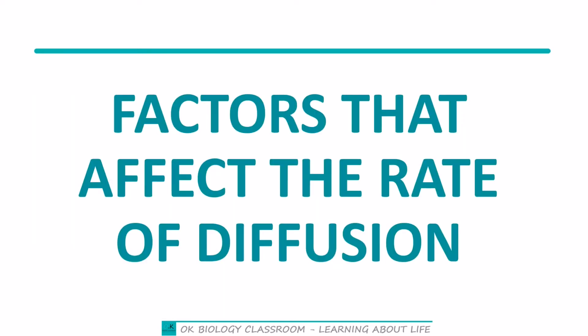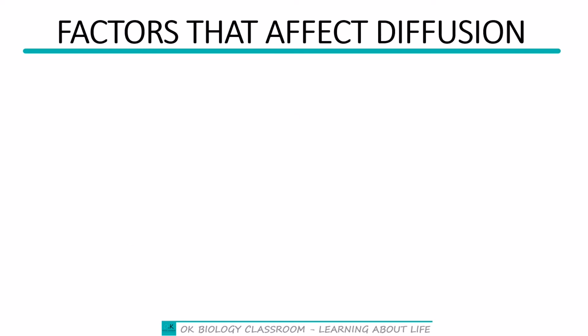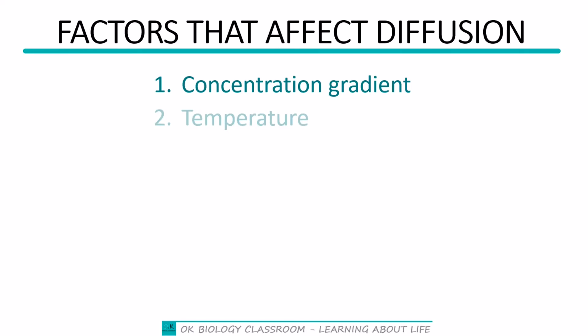Now let's move on to factors that affect the rate of diffusion — whether diffusion will be going high or going low. The first factor is concentration gradient. When a concentration gradient exists, diffusion freely occurs. When concentrations are balanced, diffusion wouldn't occur.